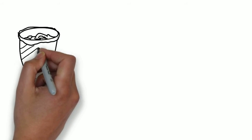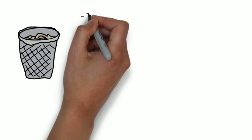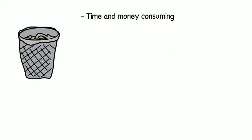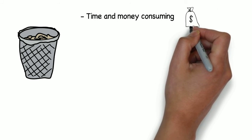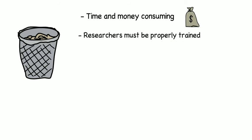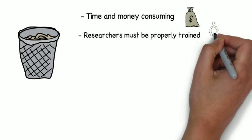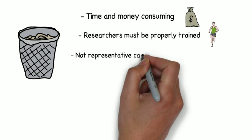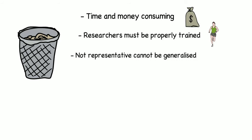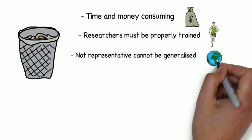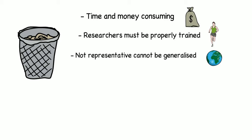However, there are also a number of disadvantages that accompany participant observations. First, there are practical issues: observations can be very time and money consuming, and a researcher must be fully trained with good observation and interpersonal skills to be successful — this research can itself be stressful and demanding. There are also issues with representativeness. Because of the costly and time-consuming nature of observations, it is likely that only one group will be observed, making it difficult to generalise findings to other groups — for example, one criminal gang may behave very differently to another.